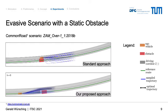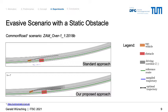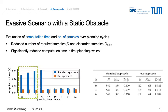Our first experiment is an evasive maneuver around a static obstacle. The ego vehicle, shown in orange, attempts to evade the static obstacle in red, which occupies the current lane. At time step k equals 6, we can clearly see how the generated trajectories in our approach are focused around the narrow passageway around the obstacle. In the standard approach, samples are generated in fixed intervals around the reference path shown in green. After moving around the obstacle, both planners are able to complete this evasive maneuver.